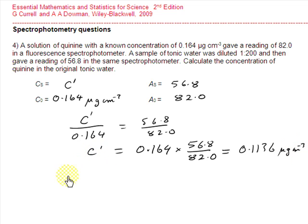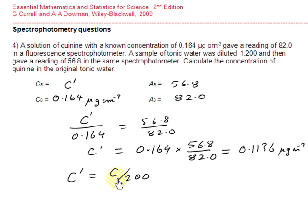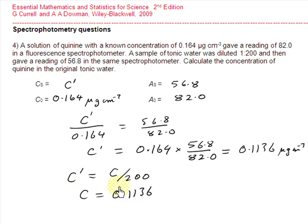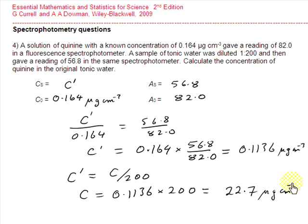We know that the diluted solution C dash was obtained by diluting an initial concentration C by a factor of 200, so C dash equals C divided by 200. Rearranging, the concentration of the initial solution equals C dash, which is 0.1136, multiplied by 200, giving a concentration for the tonic water of 22.7 micrograms per centimetre cubed.